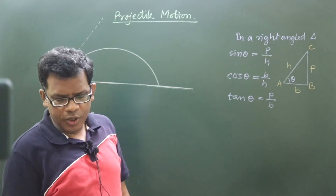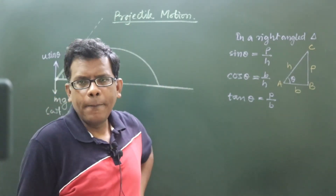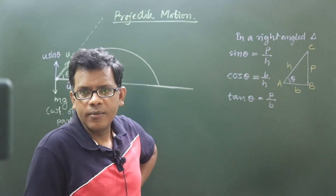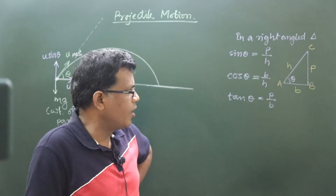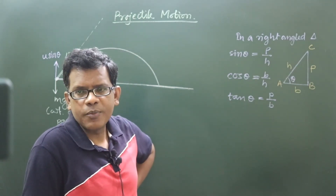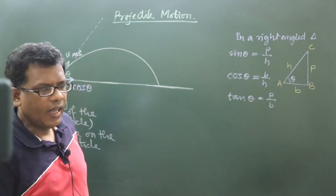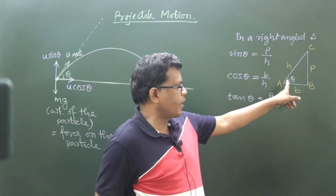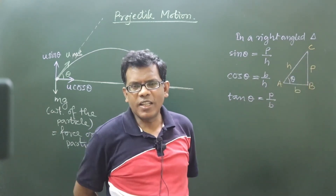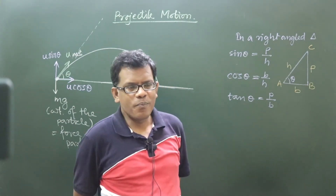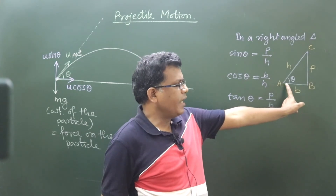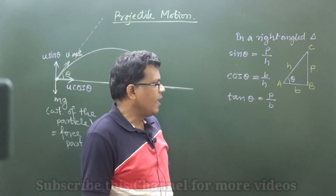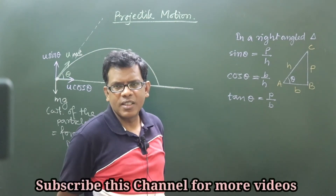In a right-angled triangle, the side opposite to a particular acute angle will be known as the perpendicular side with respect to that angle. The other side forming 90 degrees with it will be known as the base. With respect to theta, side BC is just opposite to theta, so BC is identified as perpendicular. AB forms the 90-degree angle at B, so AB is the base. The side opposite to 90 degrees will be the hypotenuse.